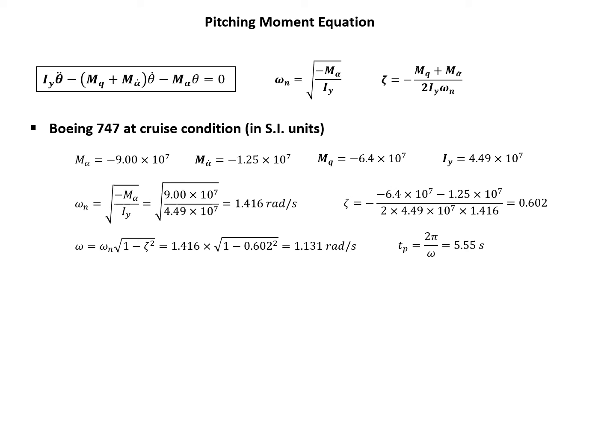Now let's move on, see another aircraft, which is Cessna 172, also at cruise condition, which cruises at 100 knots. So the M alpha, M alpha dot, M q, that's the aerodynamic derivatives, are all known, and then we can see the moment of inertia.